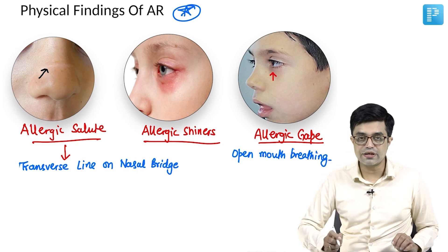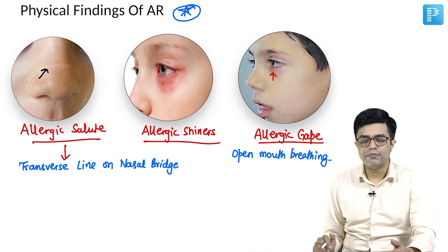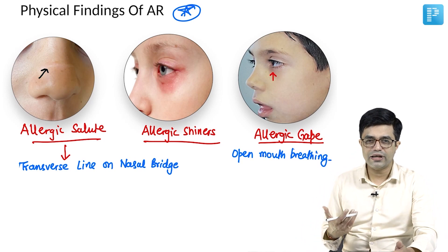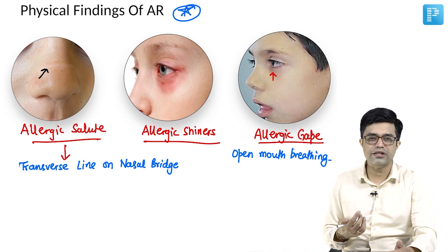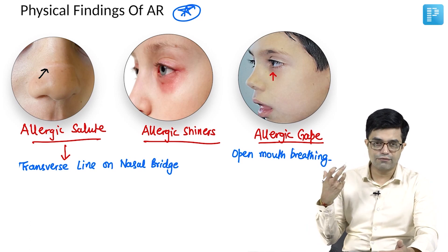Because due to allergic rhinitis and its long-term complications, you will develop some degree of adenoid hypertrophy, tonsillar hypertrophy. And so these children, because they have a chronic nasal congestion, they habitually start breathing from the mouth.